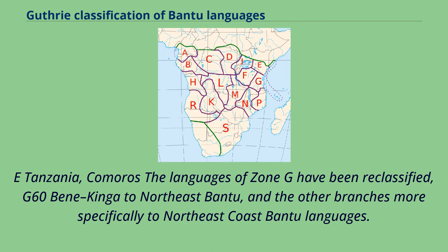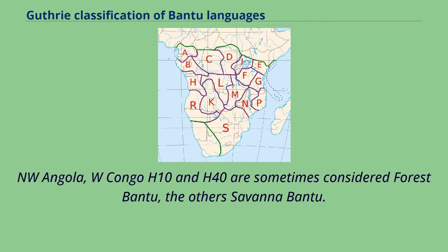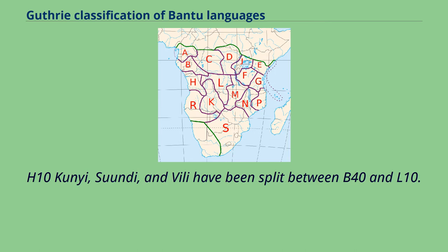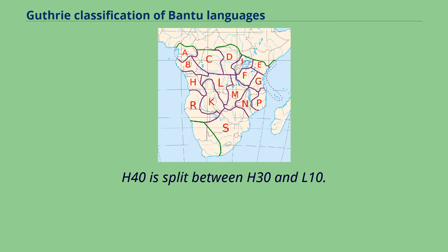Zone G covers eastern Tanzania and the Comoros. The languages of Zone G have been reclassified: G60 Bena-Kinga to Northeast Bantu, and the other branches more specifically to Northeast Coast Bantu languages. Zone H covers northwestern Angola and western Congo. H10 and H40 are sometimes considered Forest Bantu, the others Savannah Bantu. H10 Kinyï, Suundi, and Villa have been split between B40 and L10. H40 is split between H30 and L10.